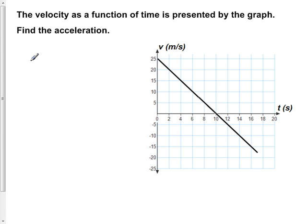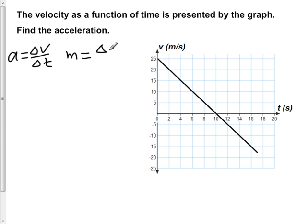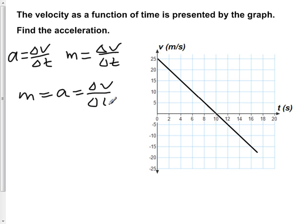The velocity as a function of time is presented by the graph. Find the acceleration. We remember that the acceleration of an object is given by delta v over delta t. If we look at the graph of velocity versus time, we see that the slope of this graph is also given by delta v over delta t, showing that the slope of the velocity versus time graph is indeed the acceleration. So our slope is equal to a, which is equal to delta v over delta t.